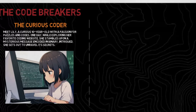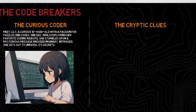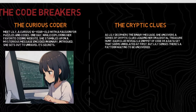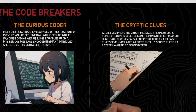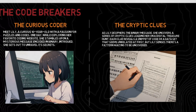The cryptic clues: as Lily deciphers the binary message, she uncovers a series of cryptic clues leading her on a digital treasure hunt. Each clue reveals a snippet of code or a data set that seems unrelated at first, but Lily senses there's a pattern waiting to be uncovered.